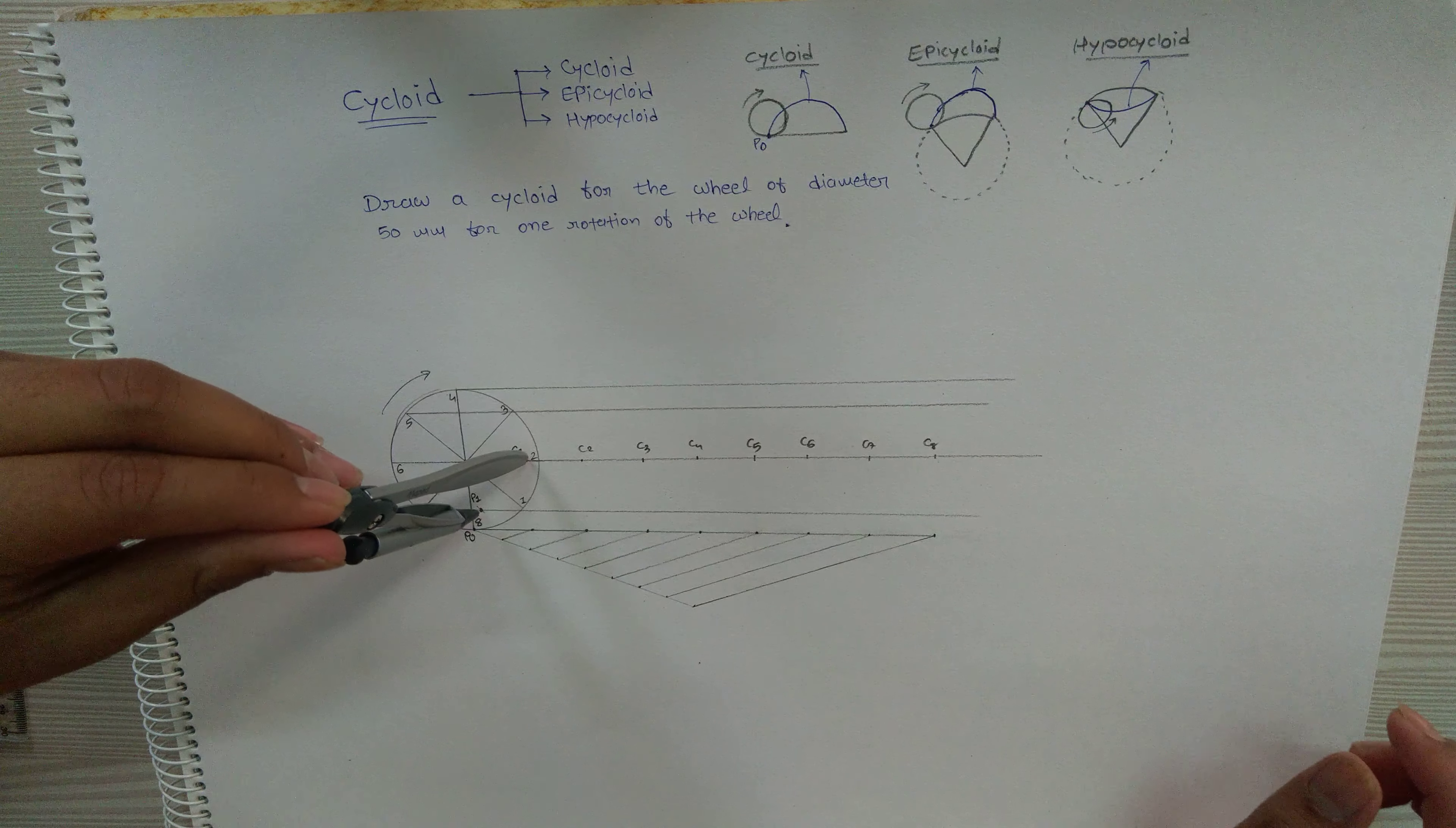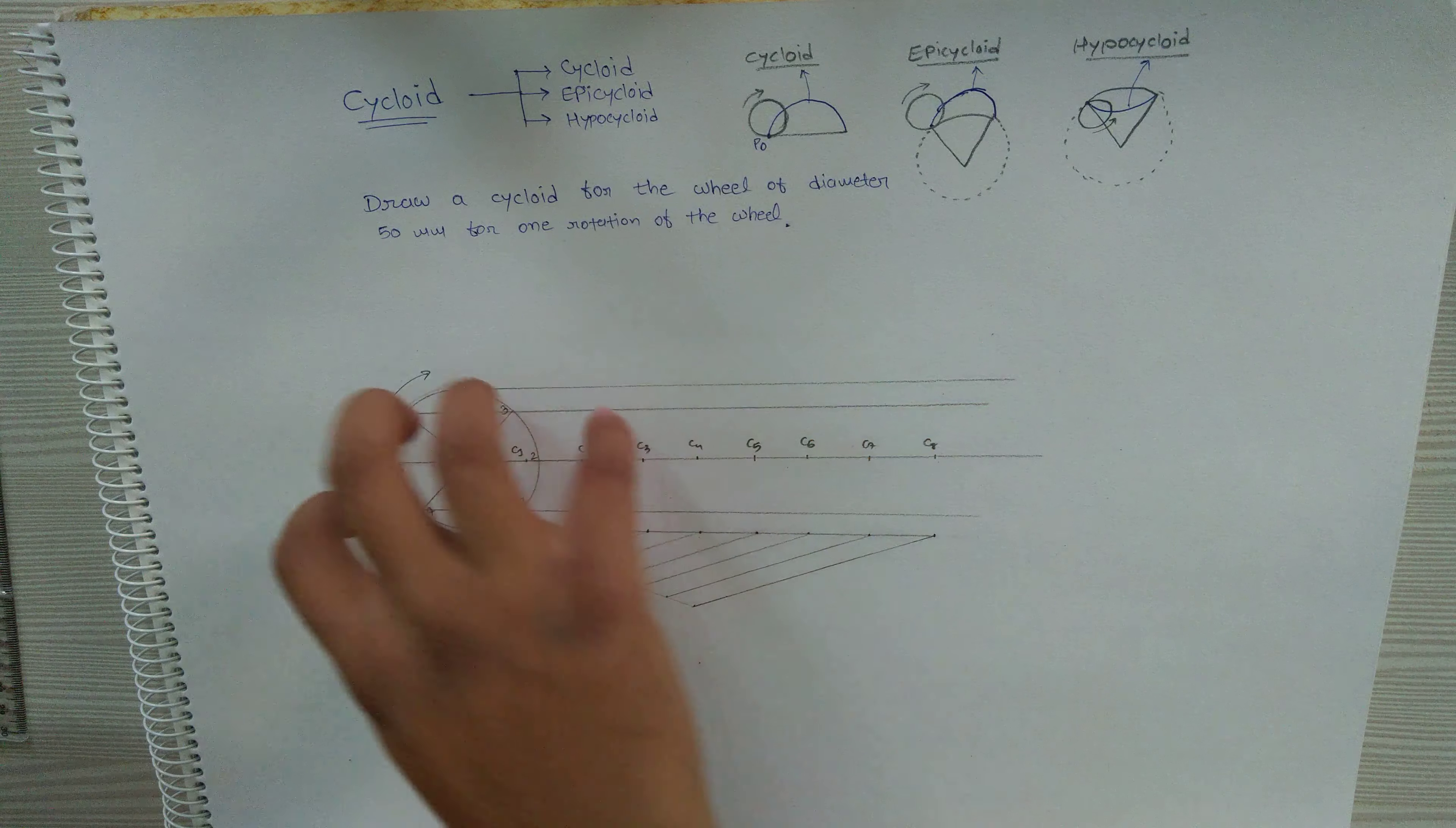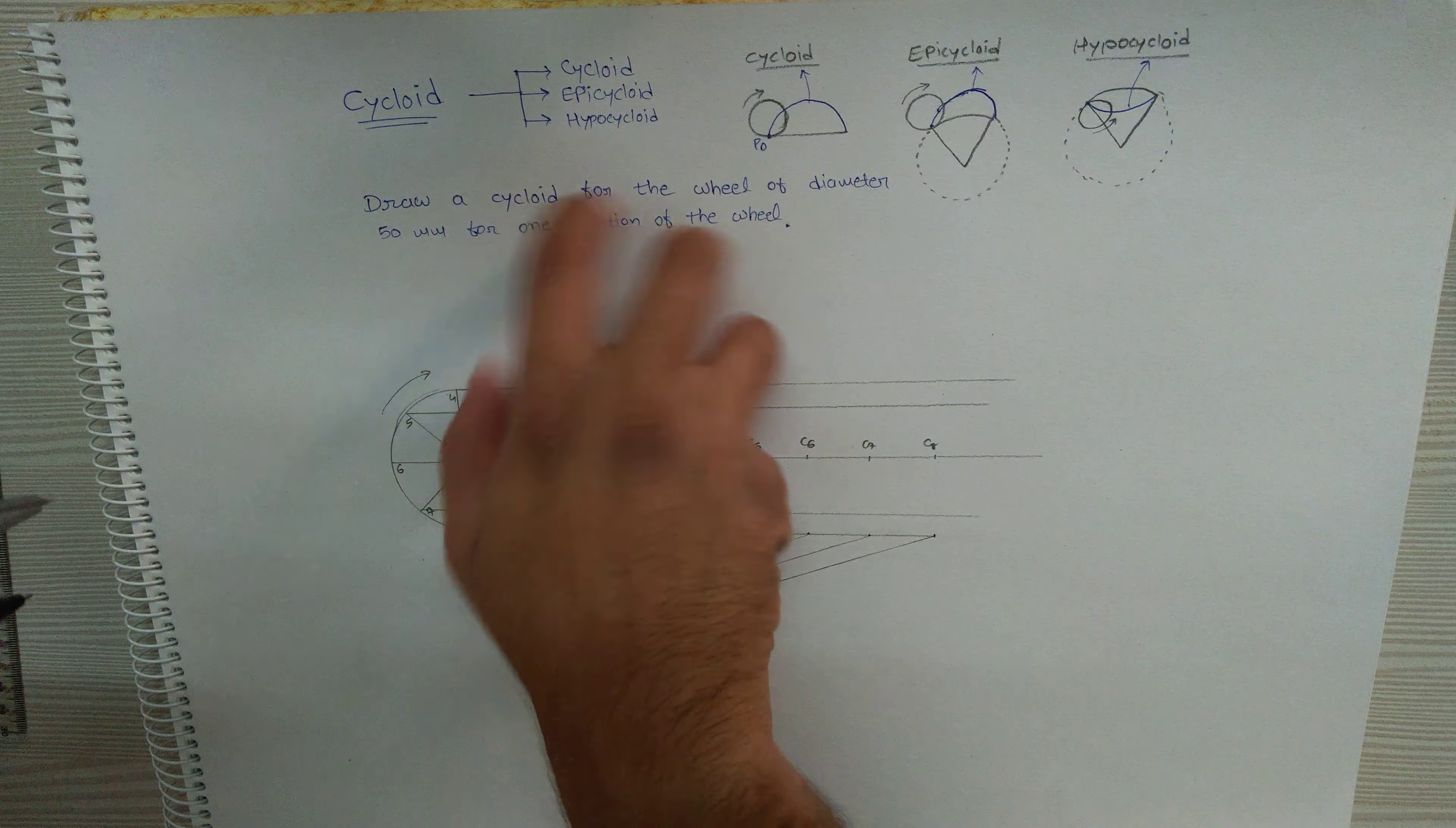Remember one thing: whenever you draw the arc, it will cut here also. But if you follow the logical sequence of the rotation of the wheel, you can simply get this. This point cannot jump directly from this to this position - it can go in this fashion.